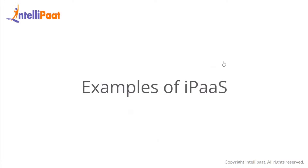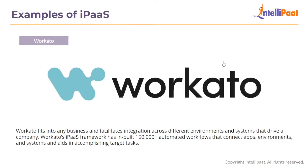Now let us move on to the examples of IPaaS. IPaaS acts as an effective medium of connection and communication between all applications and data existing within a company. The first example is Workato. Workato fits into any business and facilitates integration across different environments and systems. Workato's IPaaS framework has an inbuilt 150,000 plus automated workflows that connect apps, environments and systems and aids in accomplishing target tasks.